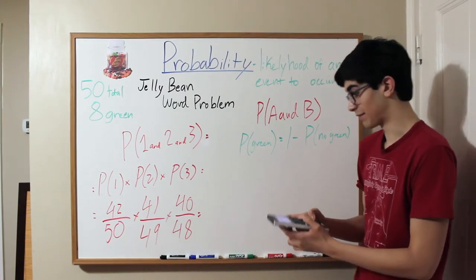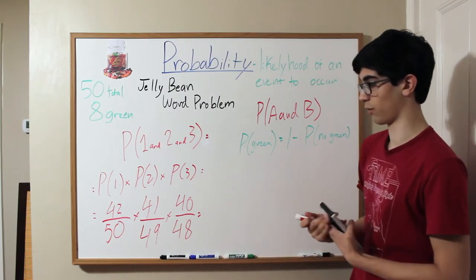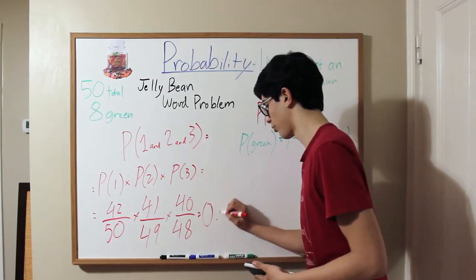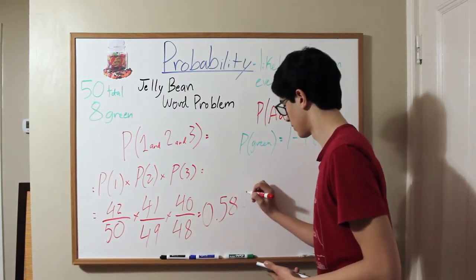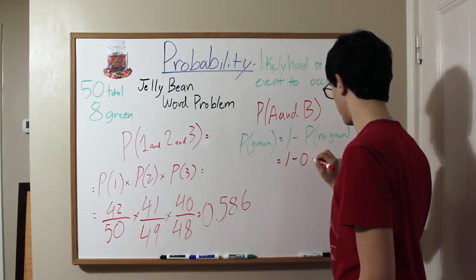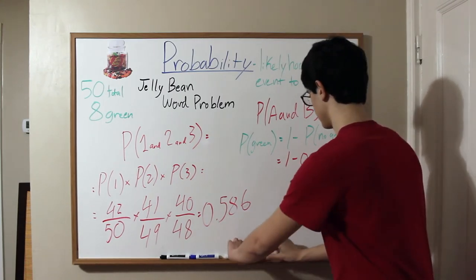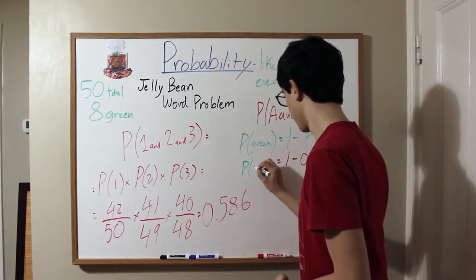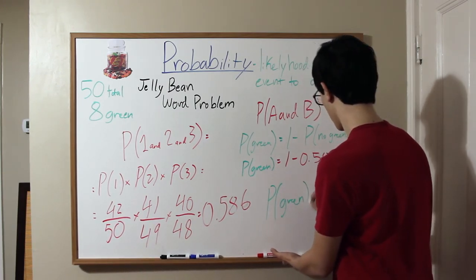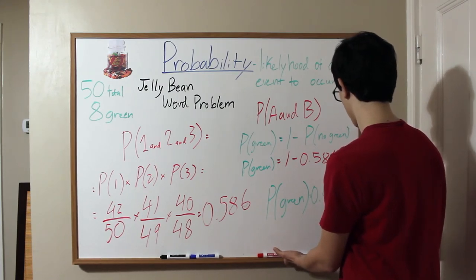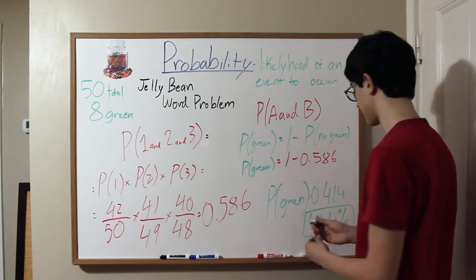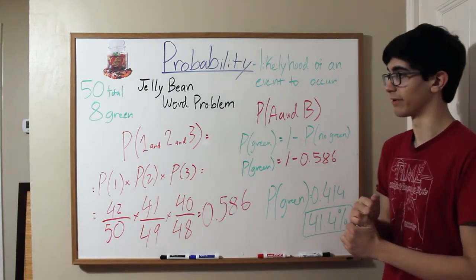Now we can find our probability. Using a calculator: 42 divided by 50, times 41 divided by 49, times 40 divided by 48. That is about 41 over 70, which as a decimal is about 0.586. The probability of getting a green is 1 minus 0.586. Therefore, the probability of getting a green is 0.414, or 41.4%. And that's how probable it is that you found out you're allergic to green jelly beans.